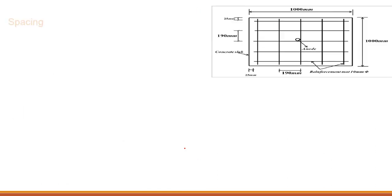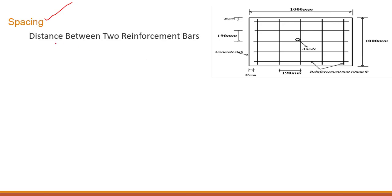Now let's look at spacing. Spacing is the distance between two reinforcement bars. For example, if we have main bars placed in a row, the distance between any two adjacent bars is called the spacing.